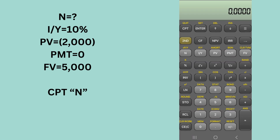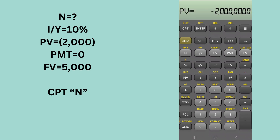N is what we're solving for. I/Y in this case is 10% interest as given in the problem. Our present value is going to be negative $2,000 — enter $2,000, then hit the plus/minus sign at the very bottom right-hand corner of your calculator, not the subtract sign — it's not the same thing. Then hit present value. This is a cash outflow when you are initially investing. When you get back the $5,000 at the end, that will be a positive inflow. Put zero in for payment.